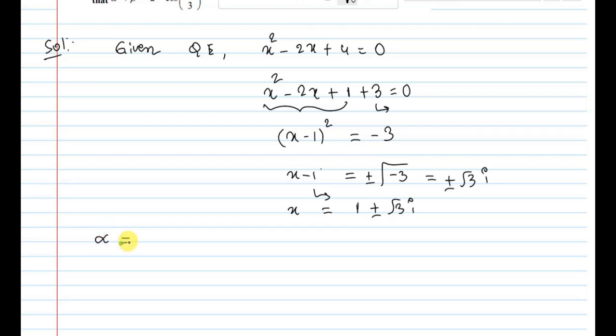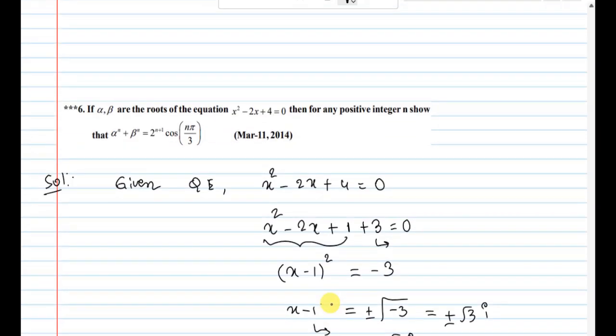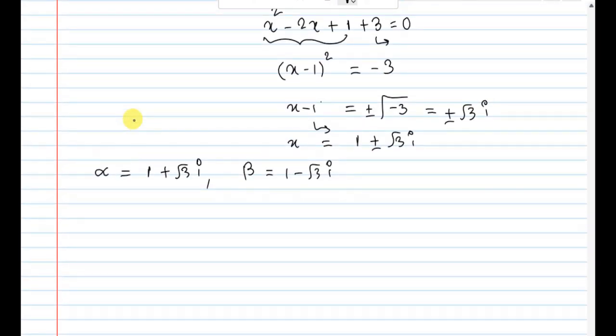Alpha and beta are the roots. So alpha equals 1 plus root 3i, beta equals 1 minus root 3i. Alpha and beta are the roots. Alpha is the first root with plus, beta is with minus.